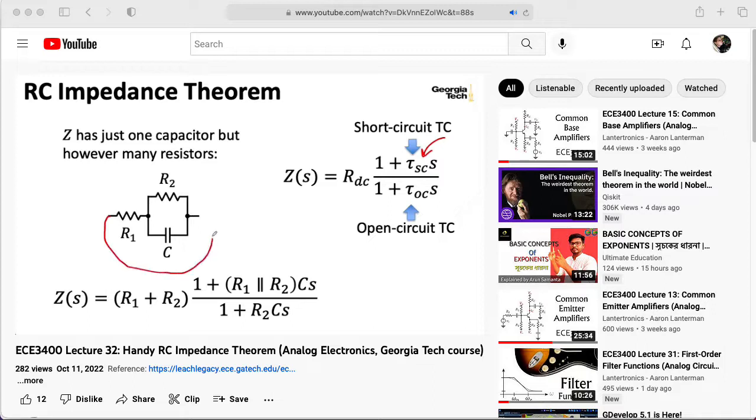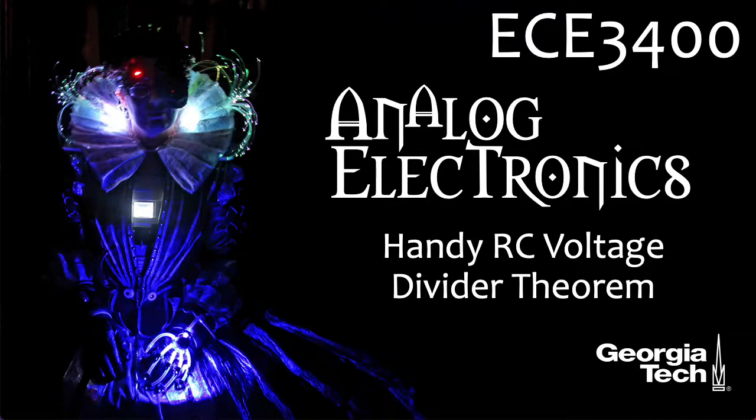we looked at a theorem involving networks of resistors and a single capacitor that was particularly convenient for finding the impedance of that network. Here we're going to look at a similar theorem that involves voltage dividers.